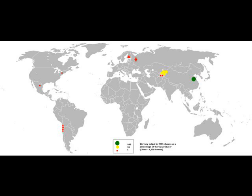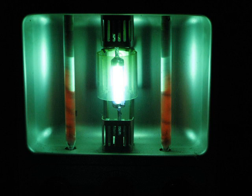The red pigment vermilion, a pure form of mercuric sulfide, is mostly obtained by reaction of mercury — produced by reduction from cinnabar — with sulfur.